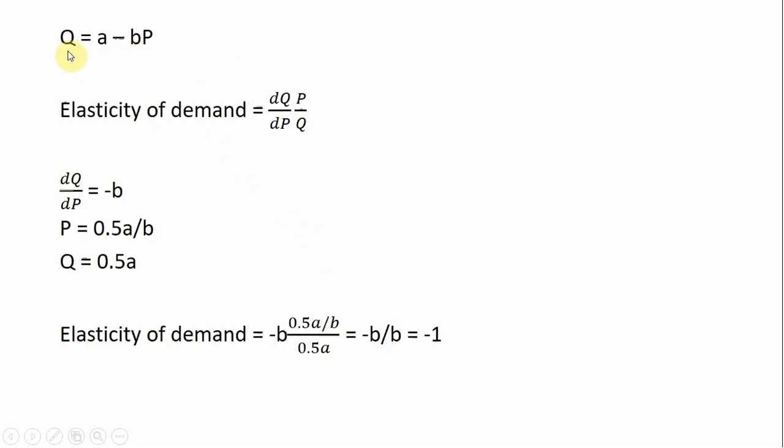The final step is rewriting the linear demand curve in general functional form. We're going to calculate the elasticity of demand by taking the derivative of this demand equation and multiplying it by P divided by Q. The derivative of this equation is just whatever is in front of the P term, which is minus B. We're going to evaluate the price elasticity of demand at a price which corresponds to the midpoint of the linear demand curve, so 0.5A divided by B. And the quantity will also be at the midpoint, so we're going to plug all these values into the elasticity of demand.